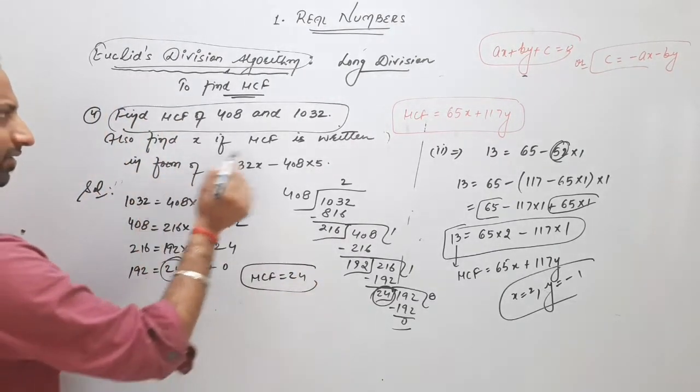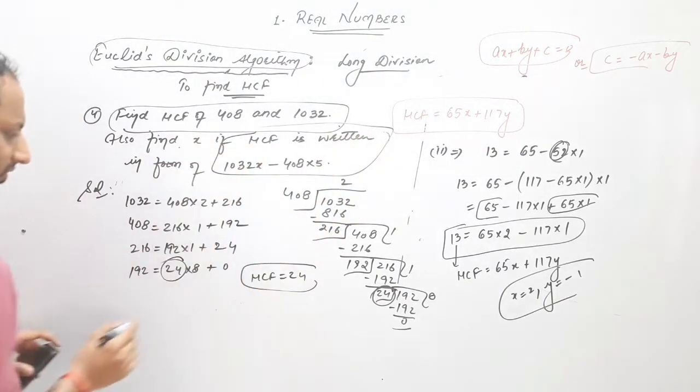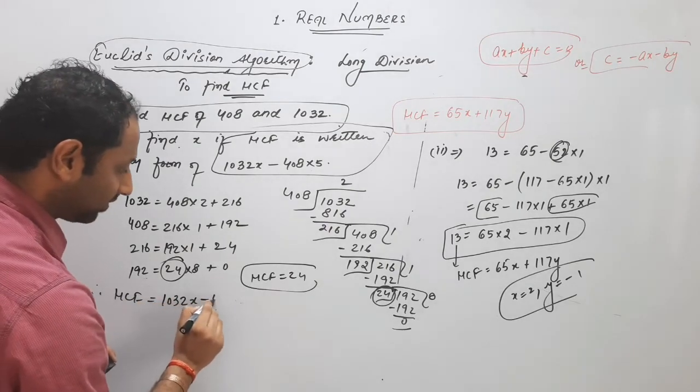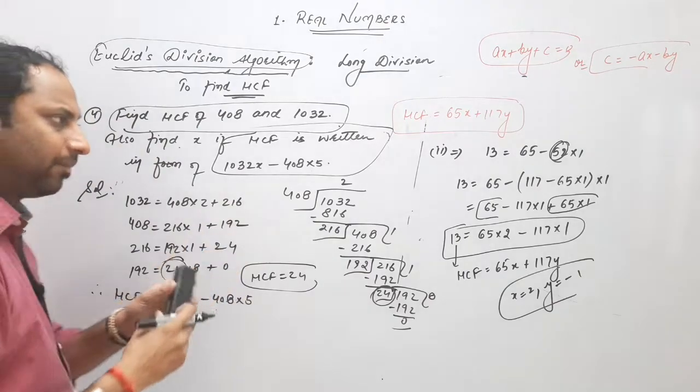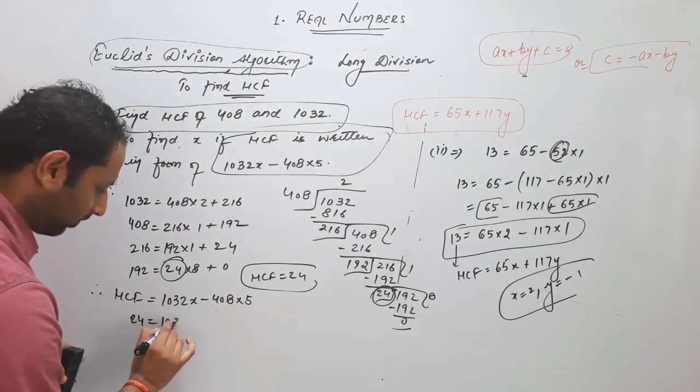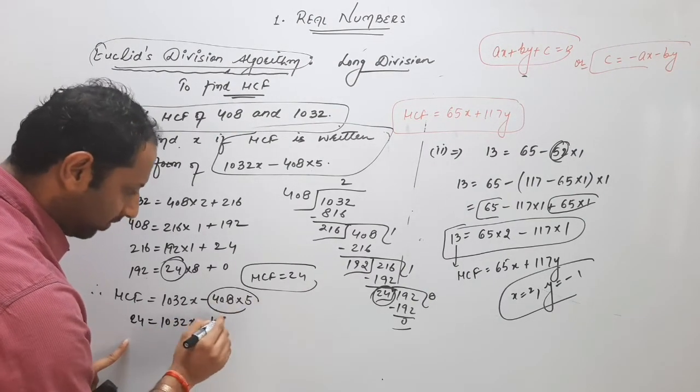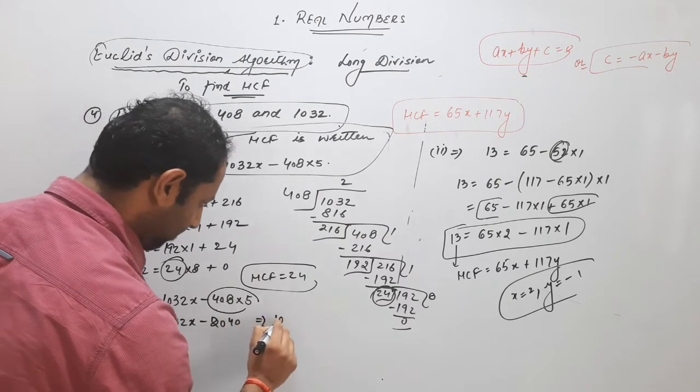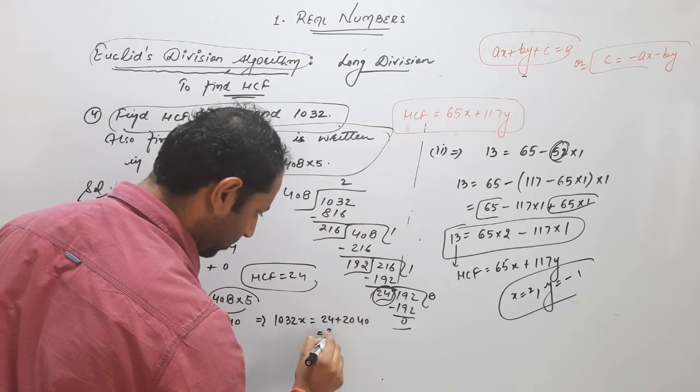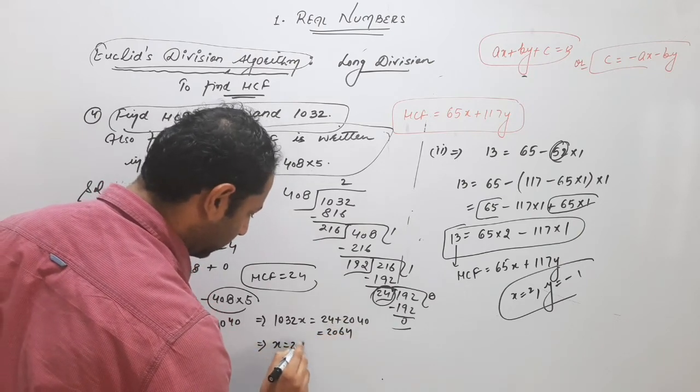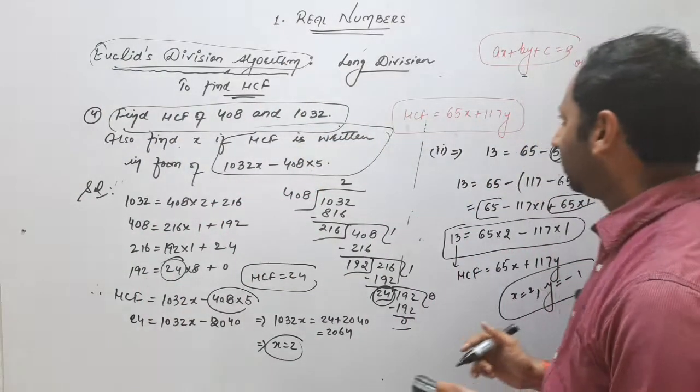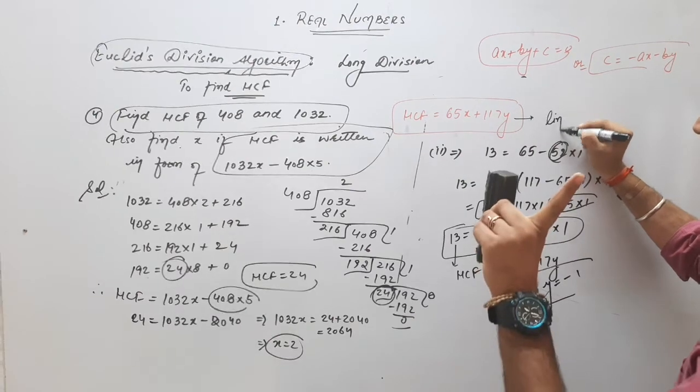Now what they said, find x if HCF is given. HCF 1032x minus this. Us example we have form here, we have a value missed, so just to solve this, HCF is 24. Now we can multiply. So this is the answer.